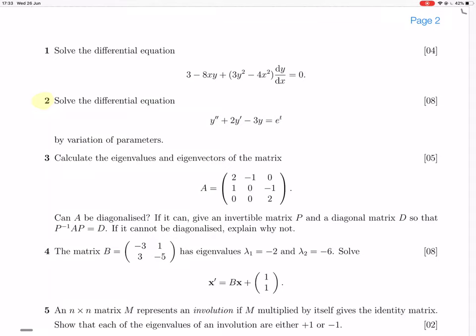Okay, so question two. You want to solve this differential equation by variation of parameters. That's going to involve solving the homogeneous version of the equation, and then using those solutions in that whole variation of parameters method.